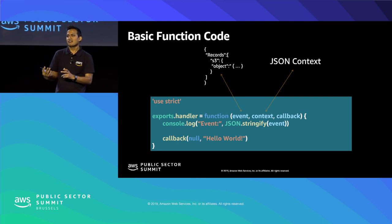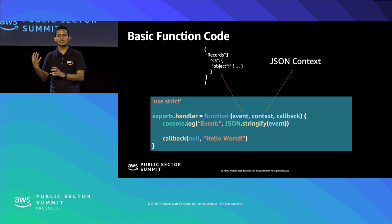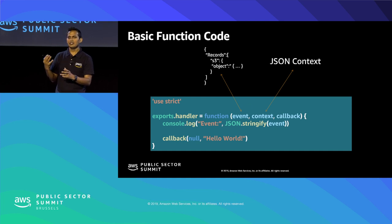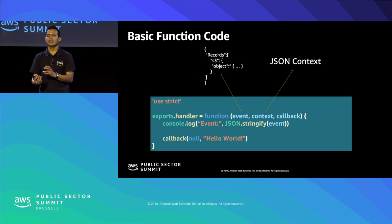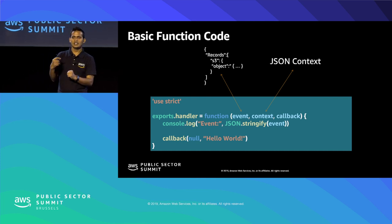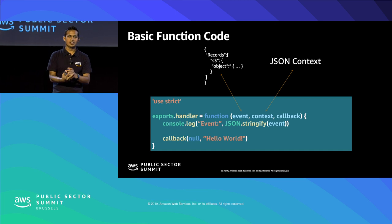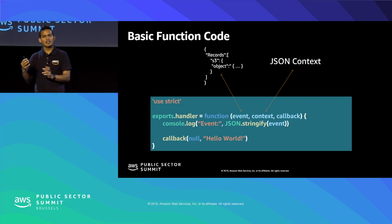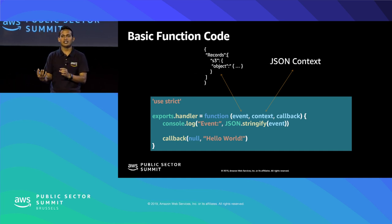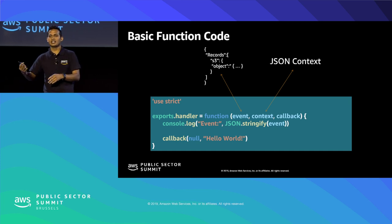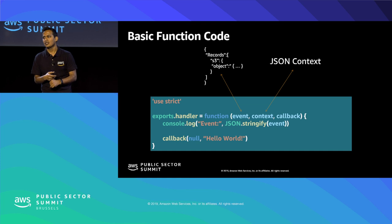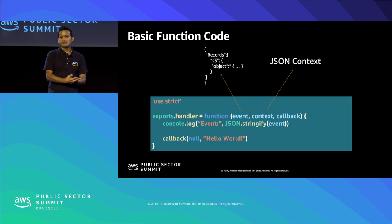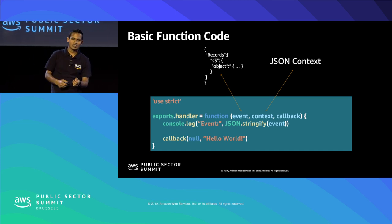A Lambda function has a handler function that is invoked whenever a new event arrives. It receives two parameters: the event, which contains the actual data payload, and the context, which contains Lambda context information like time remaining. In asynchronous languages like JavaScript you can also perform a callback using the context object.